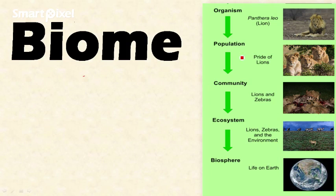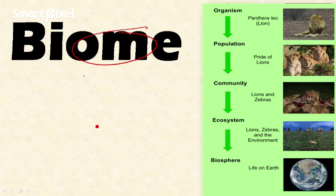Welcome friends. In this video let's discuss the topic biome. This video is part of the levels of organization of ecology in the environment ecology series. If you have not watched the previous videos please click here for conceptual clarity and come back. Biome is the fifth level of organization in ecology, the first being the organism — that is individual — then population, community.